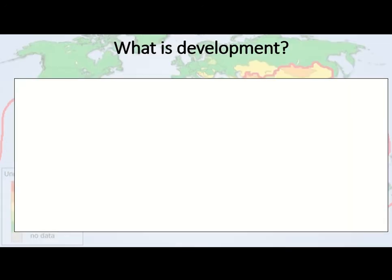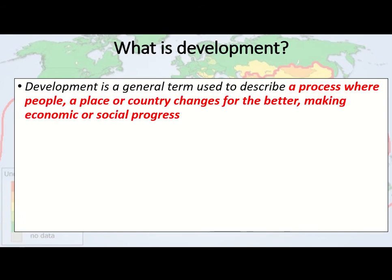We're going to start to define development — all of these definitions you need to get written down. If I go too fast, remember to pause the screen. Development in general: development is a process where people, a place, or a country changes for the better, making economic or social progress. Think about your own development — as you develop you get better, your education improves, your knowledge grows. It's about change for the better, and it can be gradual or quite fast.